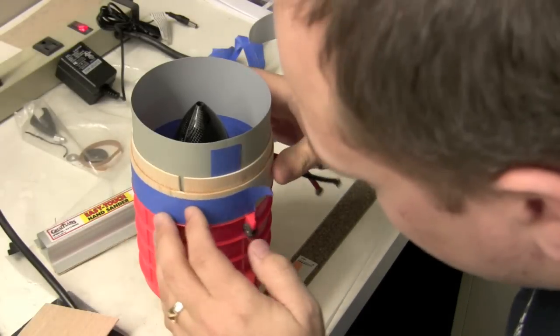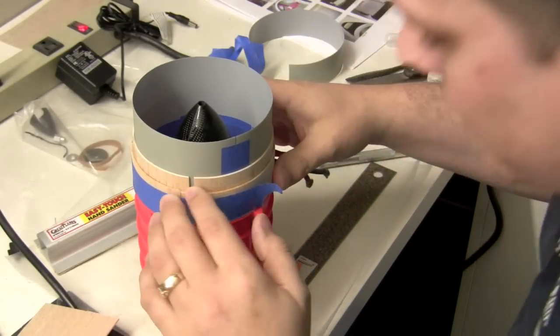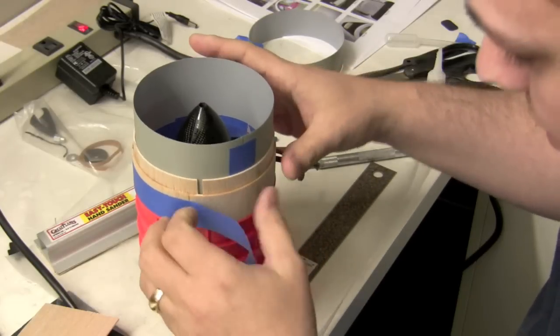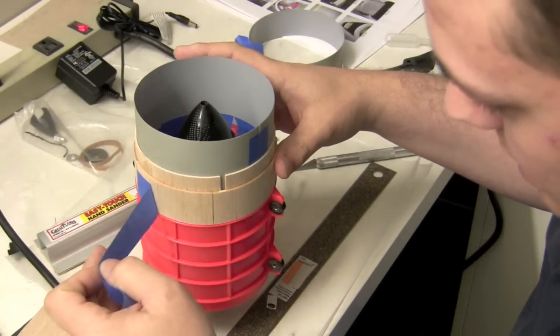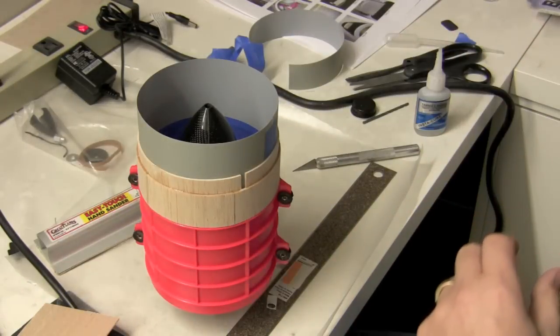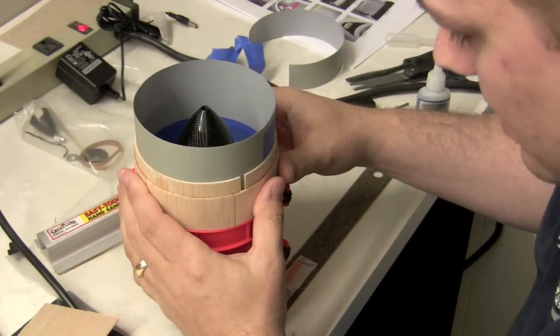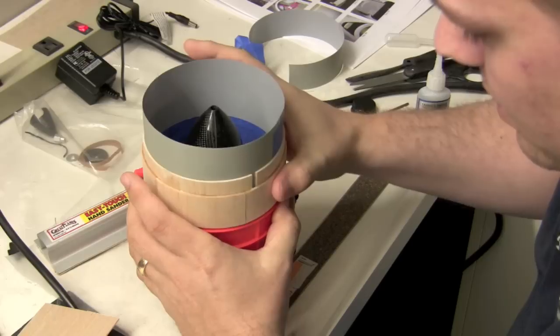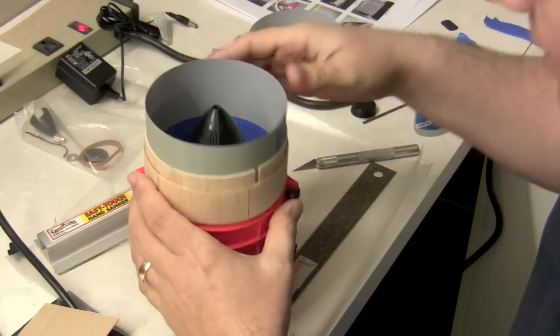And then the next step, we'll pop that baby off. Okay, so the CA is pretty good, pretty close to being dry there. So we should be able to remove our tape. Alright, so far so good.